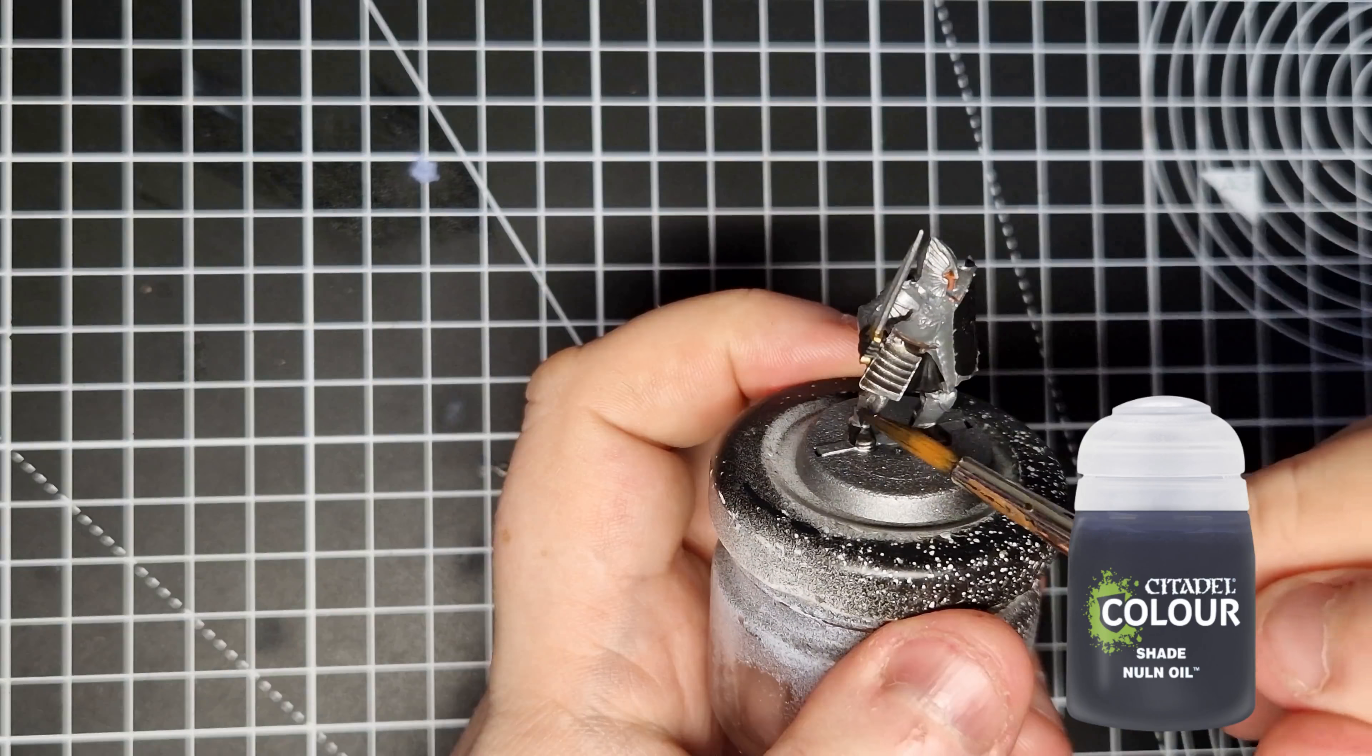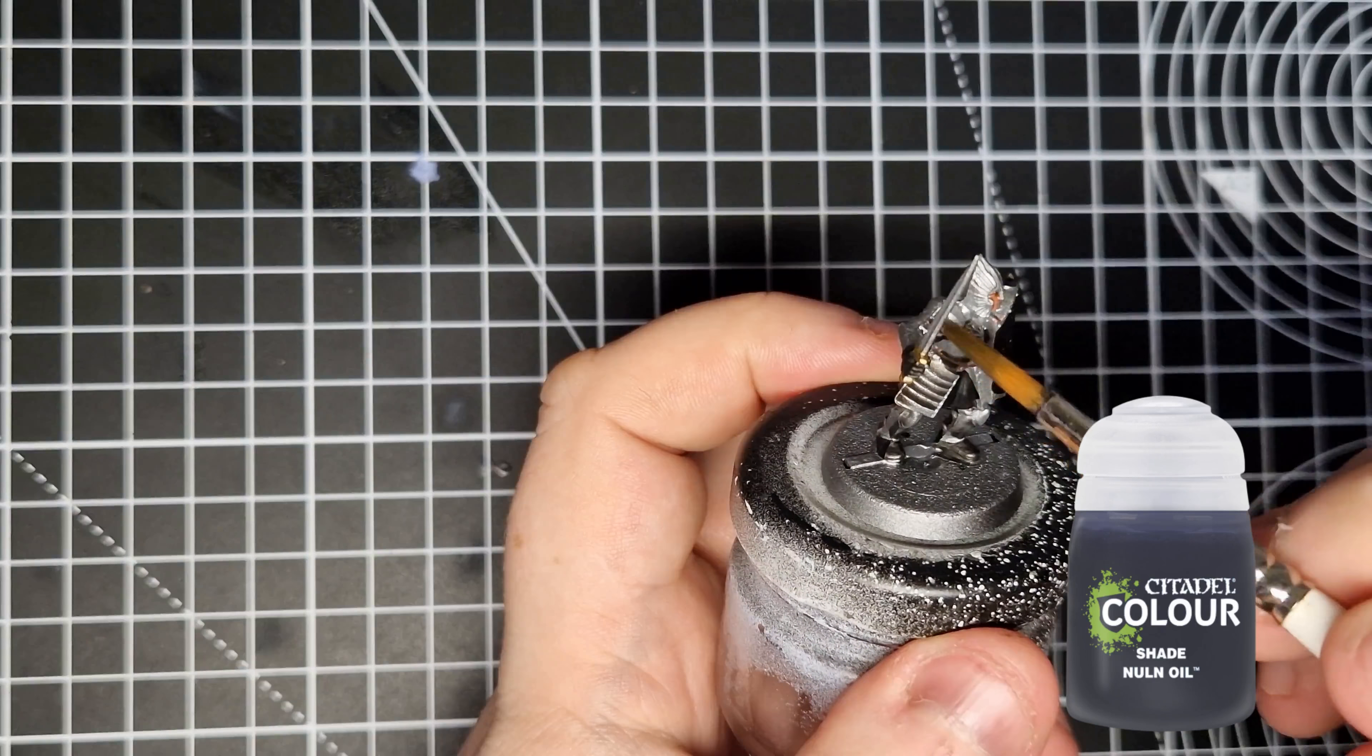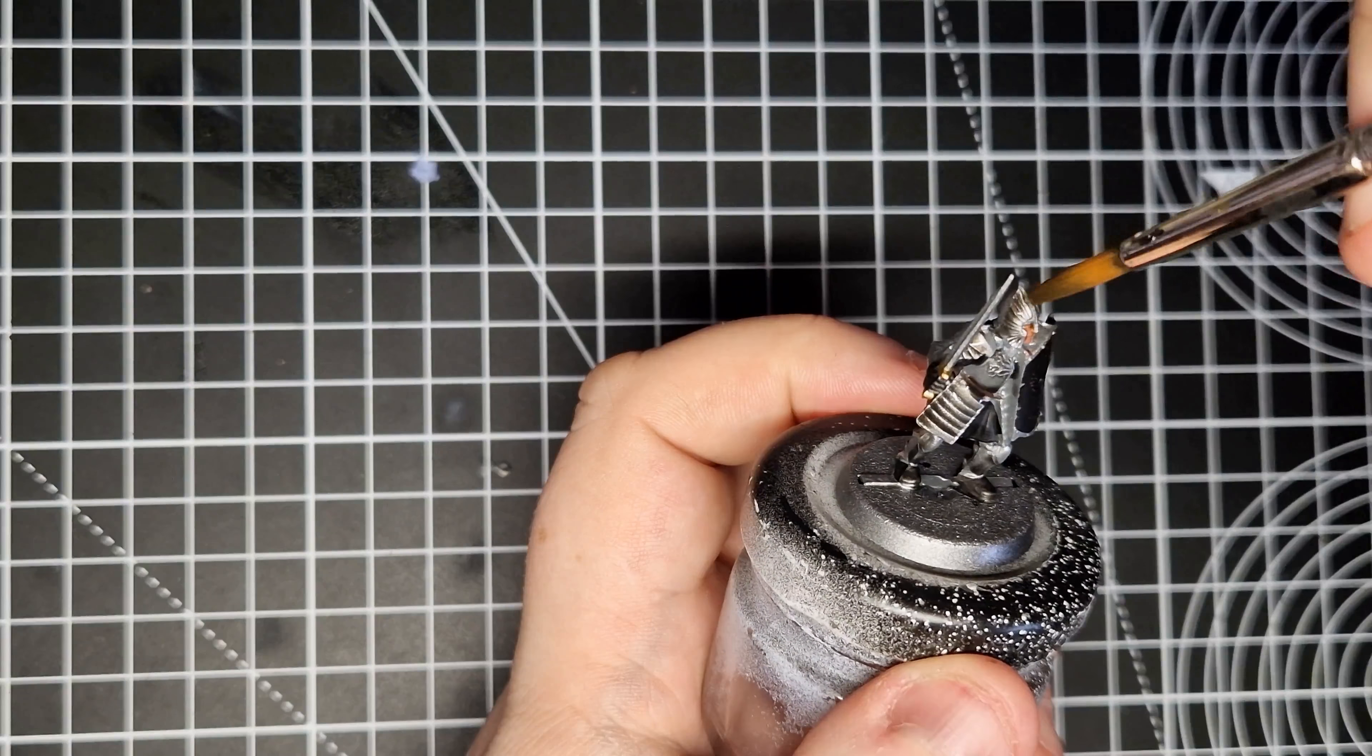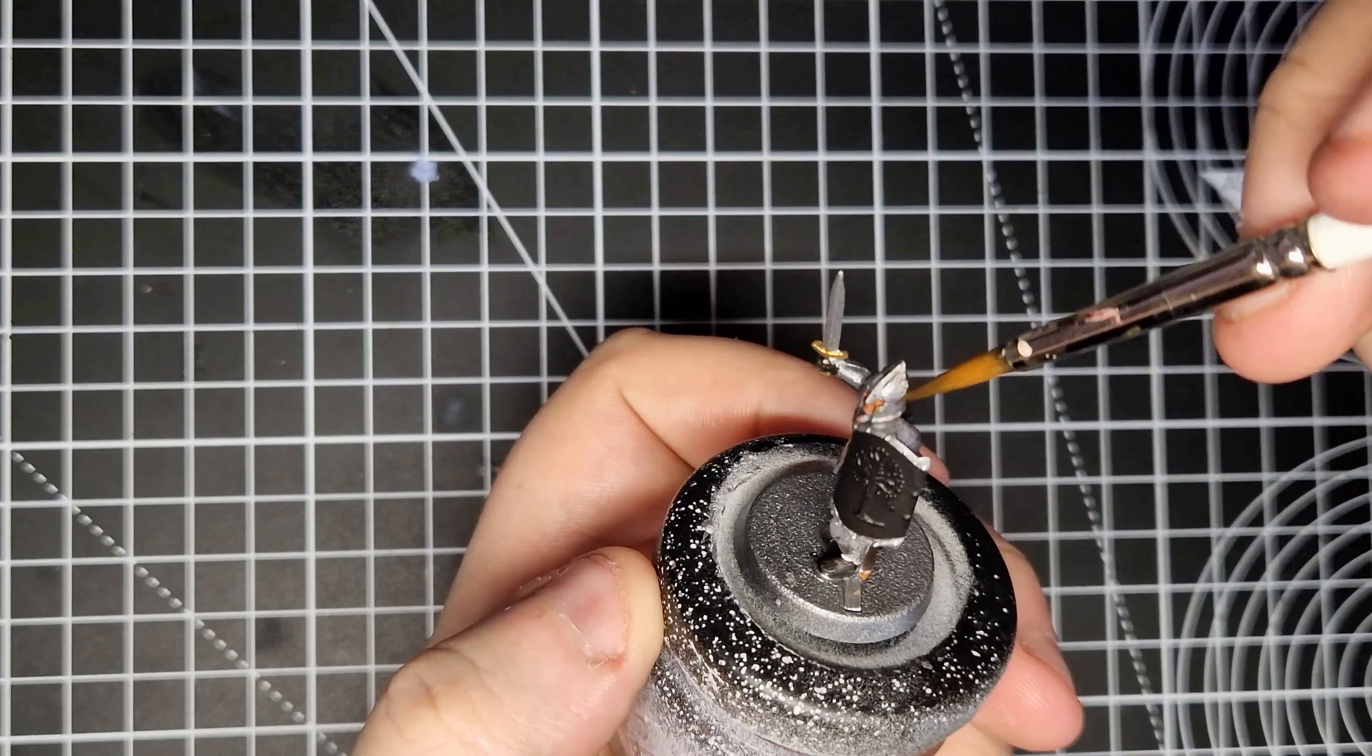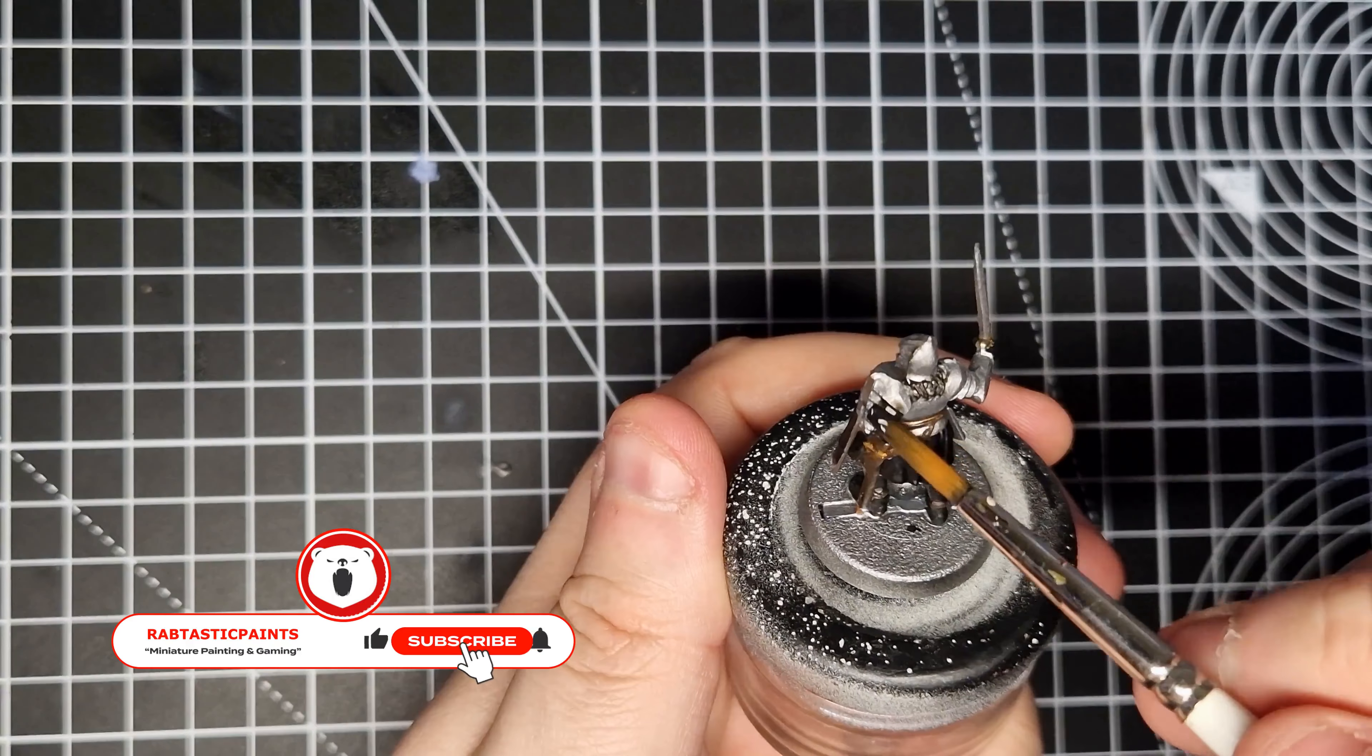And then we apply Nuln Oil to the rest of the model, getting over all of the metallics, taking care not to get on any of the flesh or the leather areas where we've already applied Reikland Fleshshade. After this, we just let the models dry. And you know what that means? It's time for my weekly, please subscribe to me request.